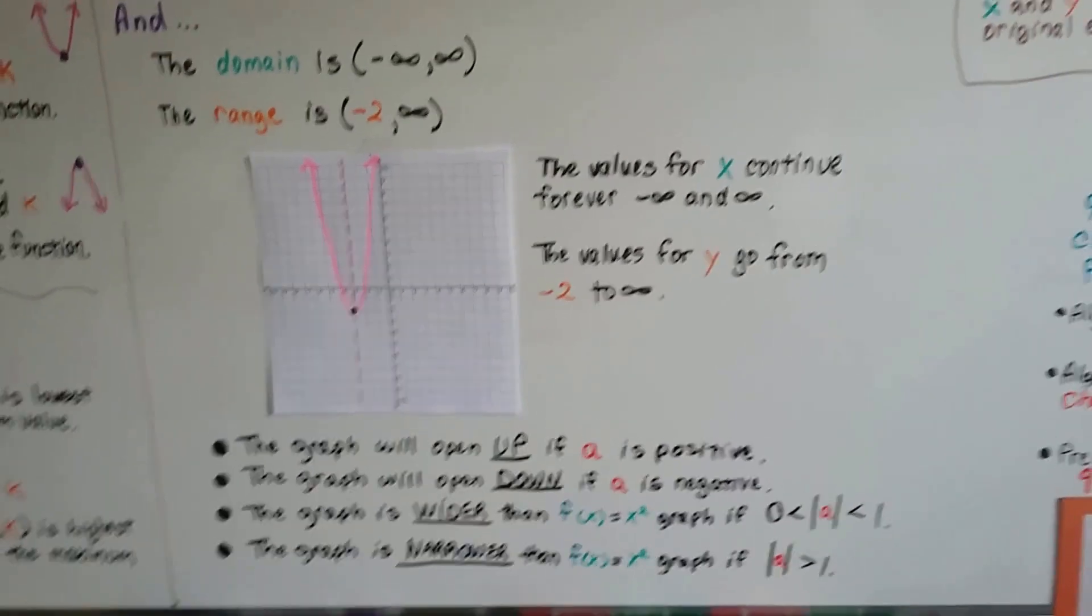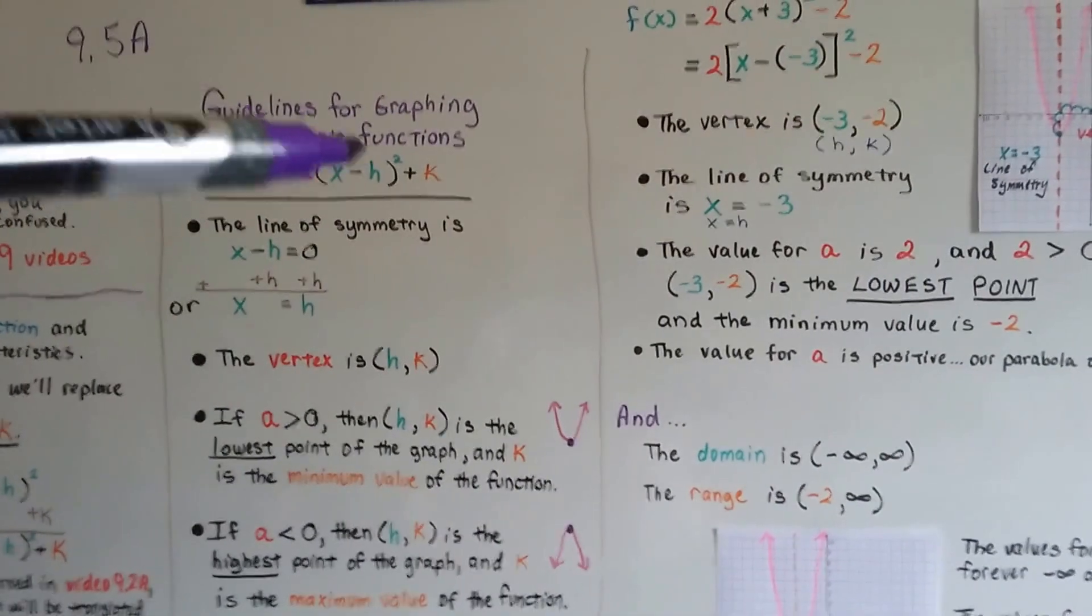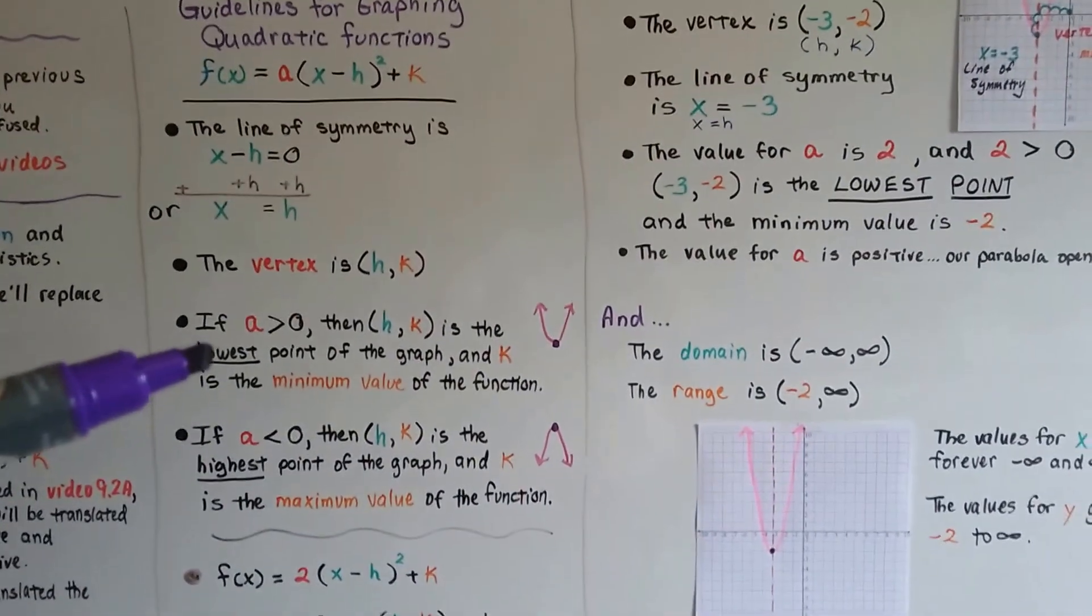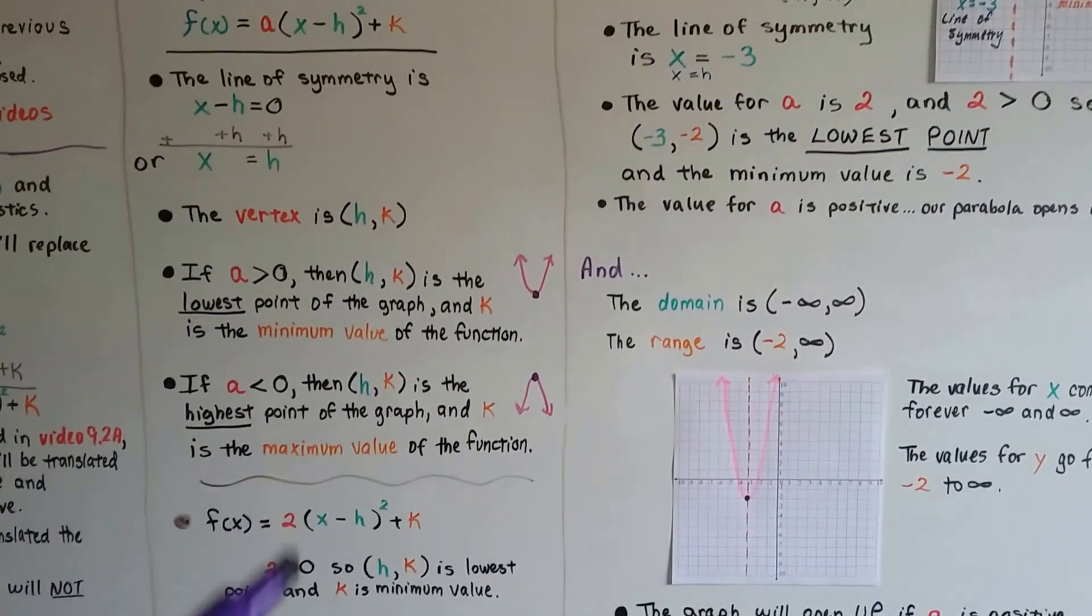So you want to remember our guidelines. That's our line of symmetry right there. The vertex is the (h, k). If a is greater than zero, then that's our minimum value, the lowest point.